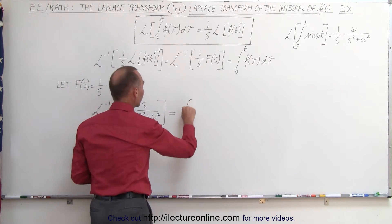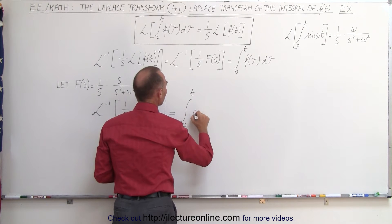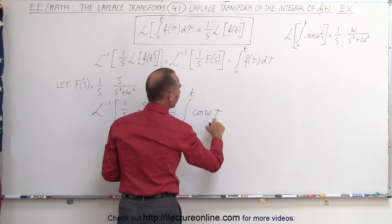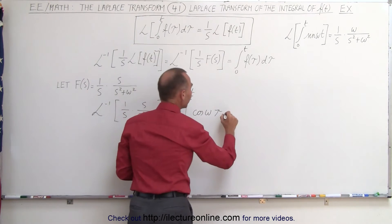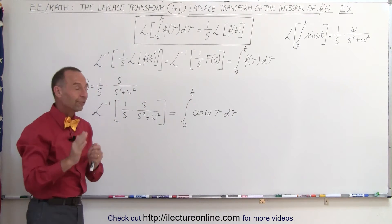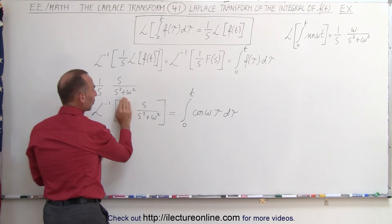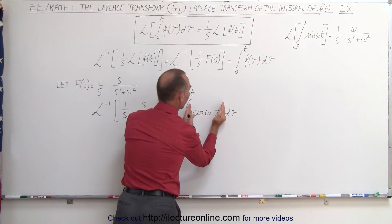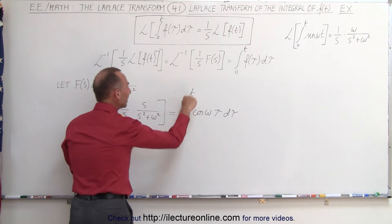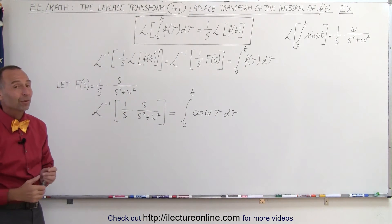This is equal to the integral from 0 to t of the cosine of omega tau times d tau, where we use the dummy variable tau instead of t. The only difference compared to having no 1 over s factor is that instead of simply getting the cosine of omega t, we get the integral from 0 to t of the function times d tau. It's as simple as that.